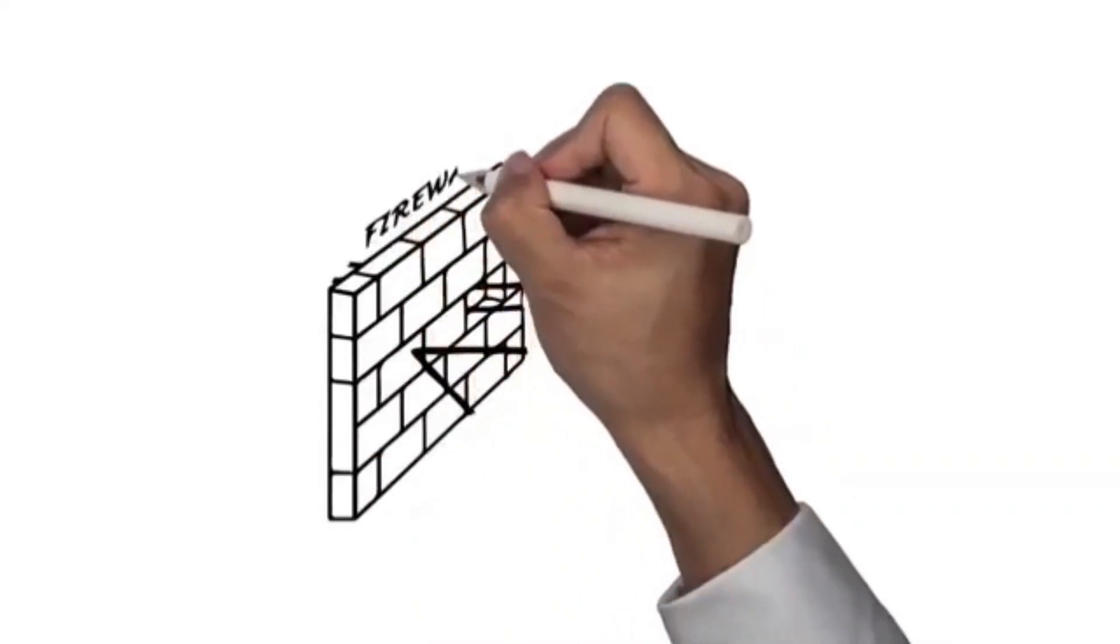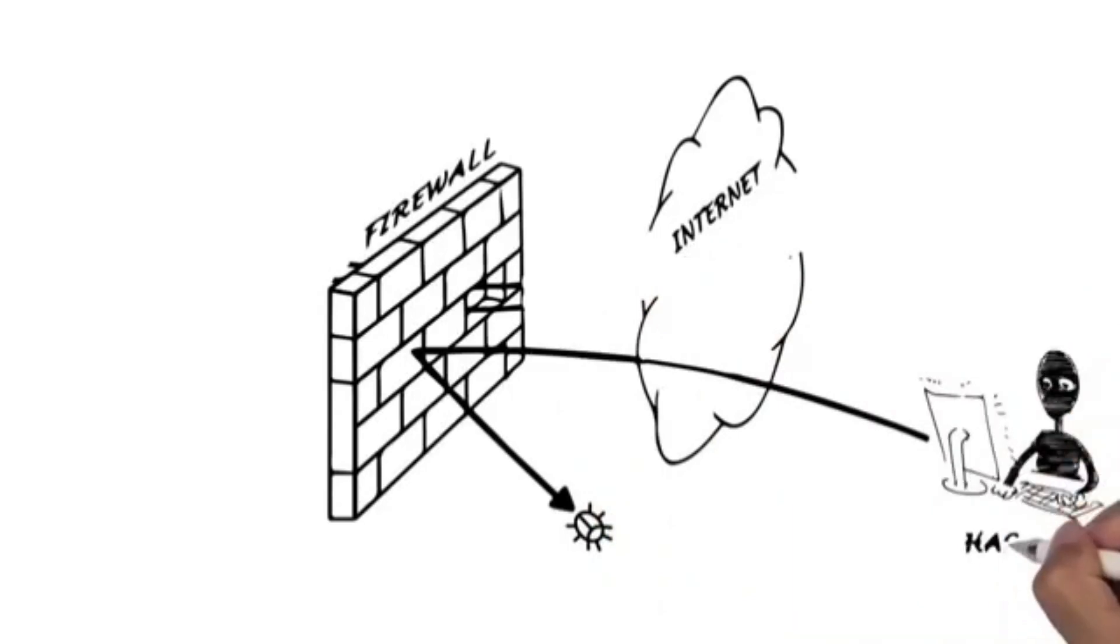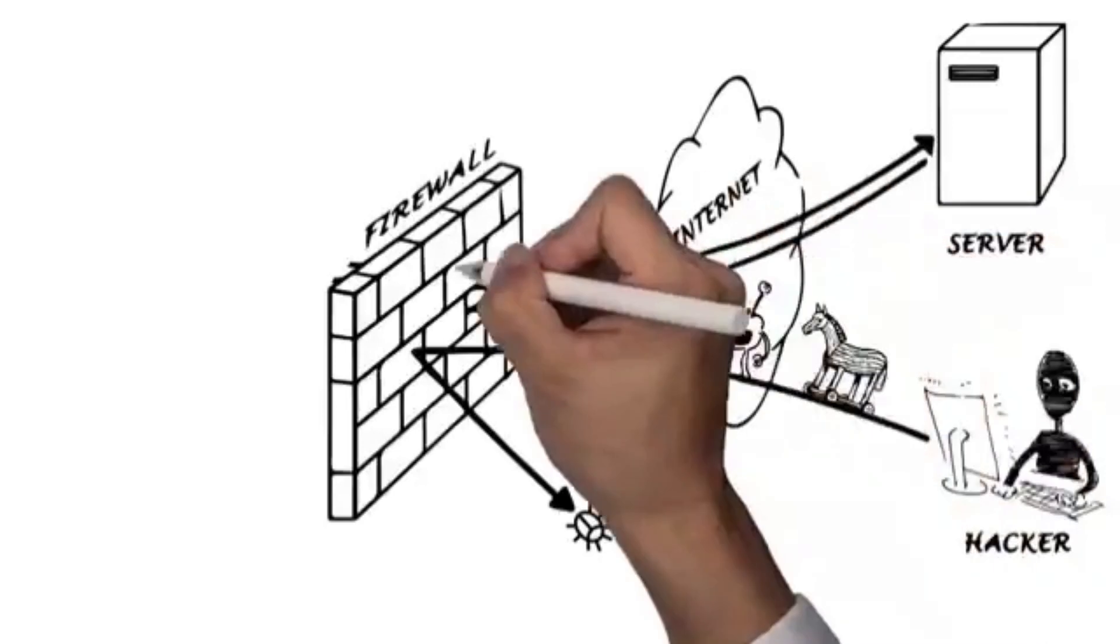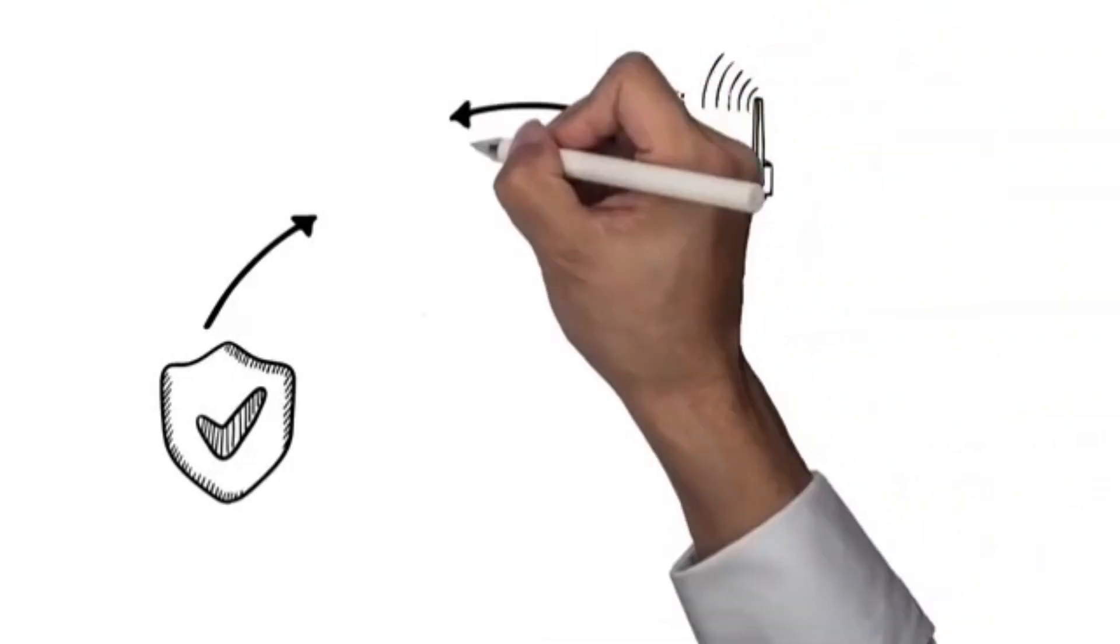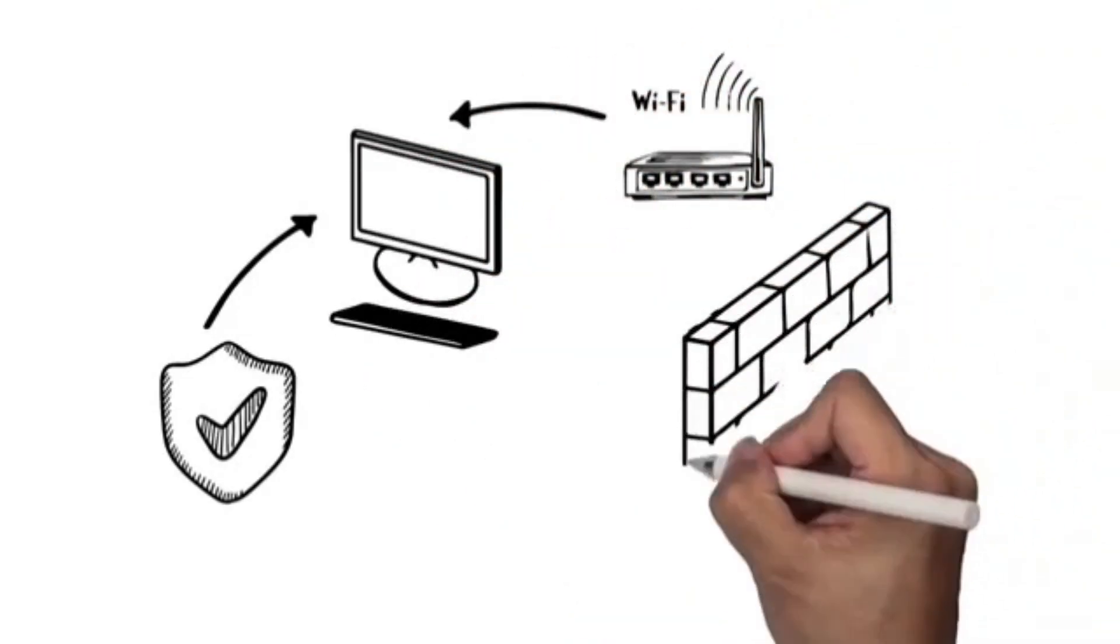It is a software and hardware configuration between the internal and external network. It will not allow any information or messages from the external network without scanning it properly. If the message contains any malware or intrusion, it will block the message and keep your computer safe.